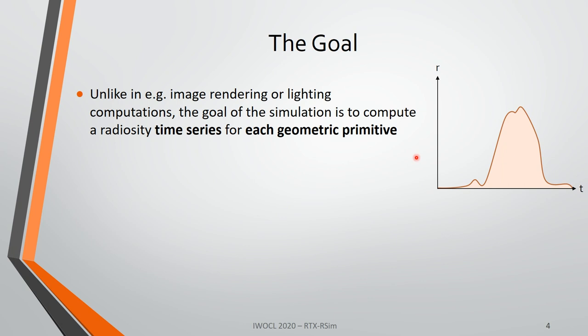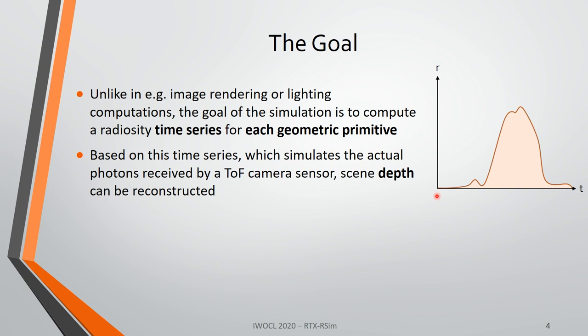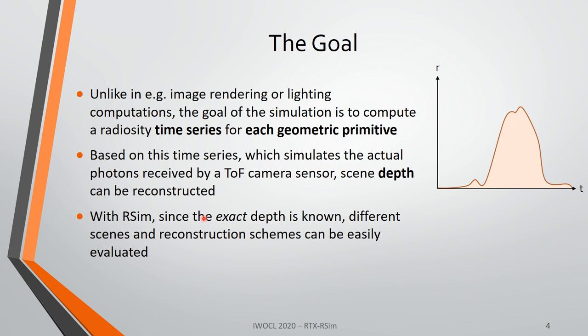For every single geometric primitive inside our scene, we want to compute a time series representing the radiosity that impacts that primitive at a particular point in time, starting from when we send our first impulse. Based on this time series — which simulates the actual photons a time-of-flight camera sensor would receive — we can reconstruct the depth of objects in the scene. That's the primary purpose of a time-of-flight camera system.